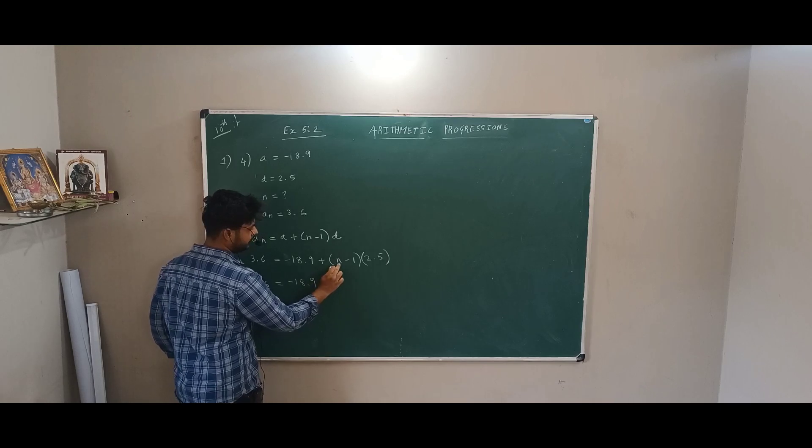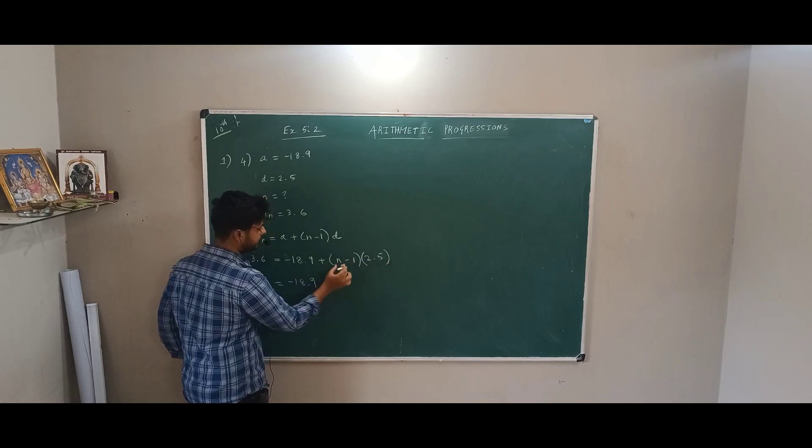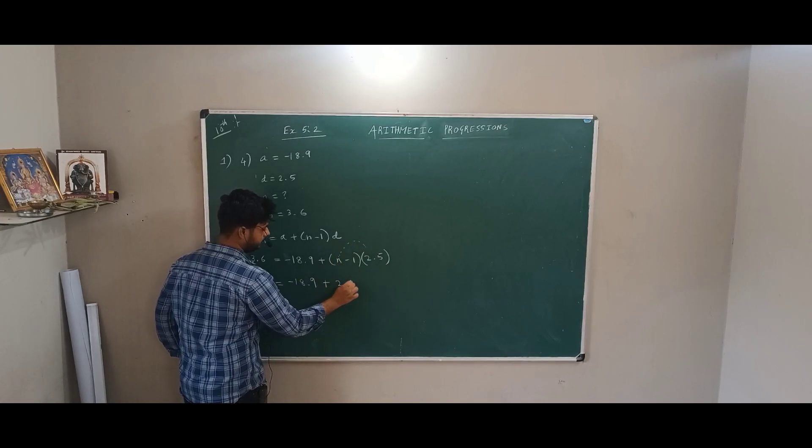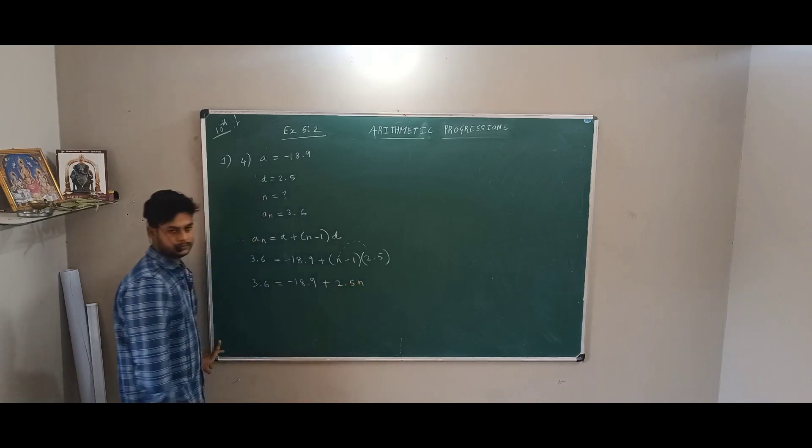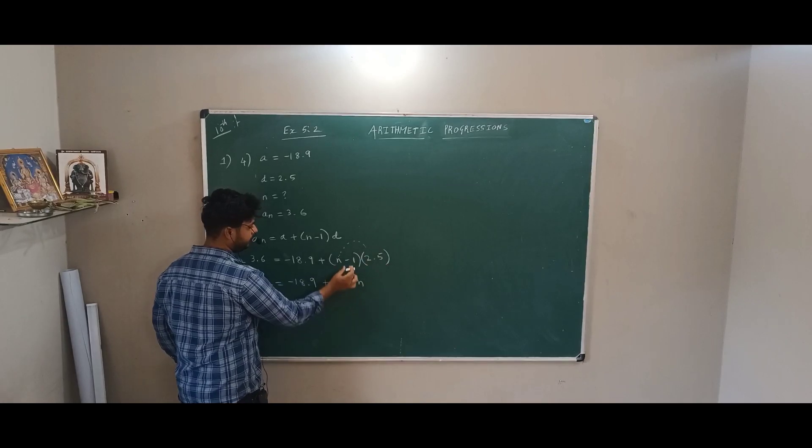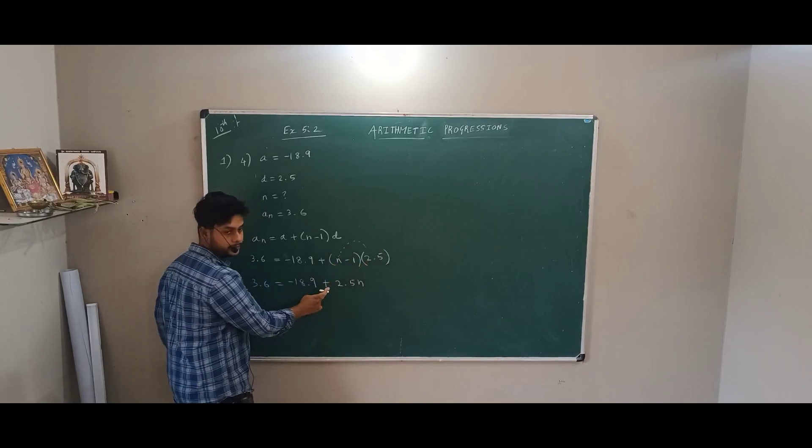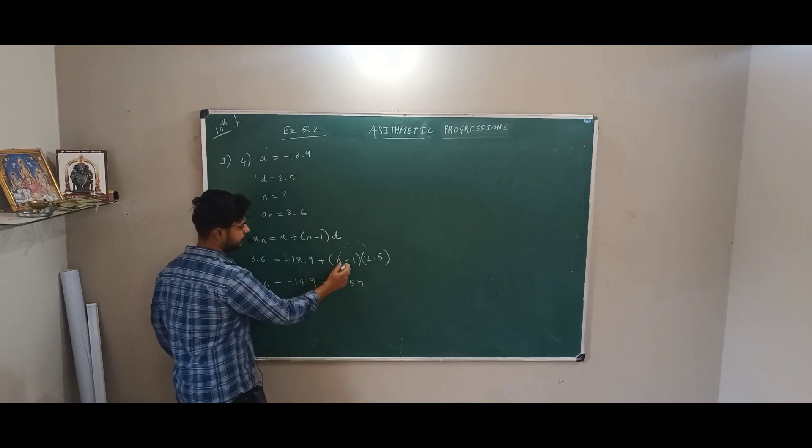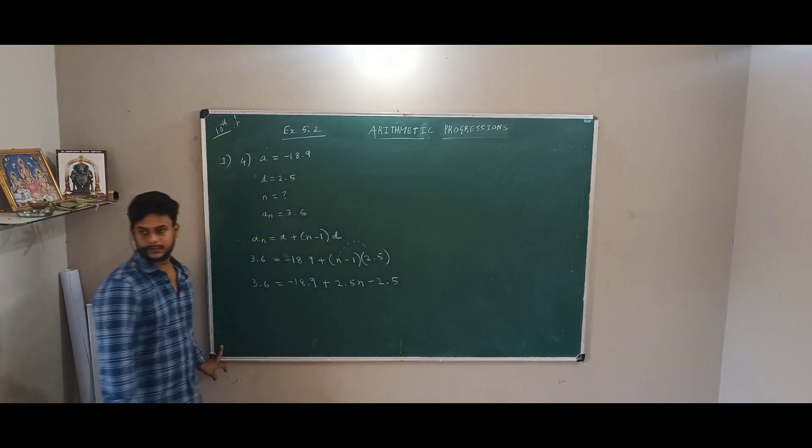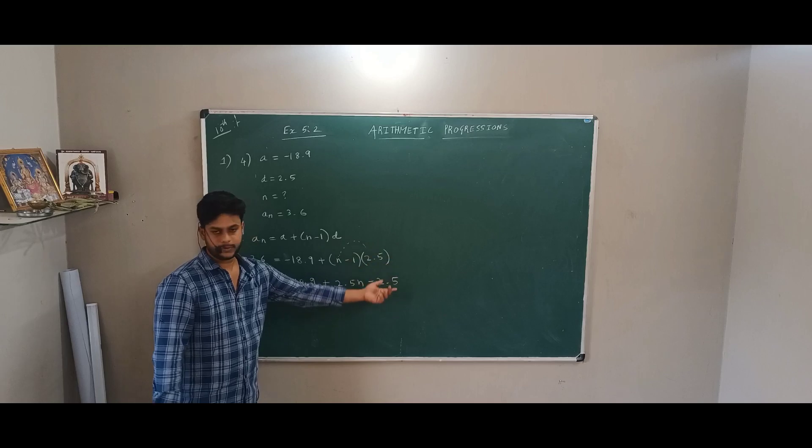First one by one we will do. First I should multiply with N. First N I should multiply with 2.5, what I will get? 2.5N. One by one is multiplied. First N into 2.5, now because N is also positive, 2.5 is also positive. Here minus 1 is there, so minus 1 into 2.5, minus 2.5. First N into 2.5, minus 1 into 2.5.